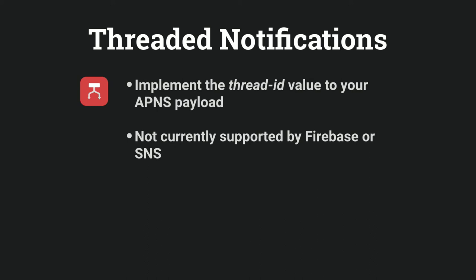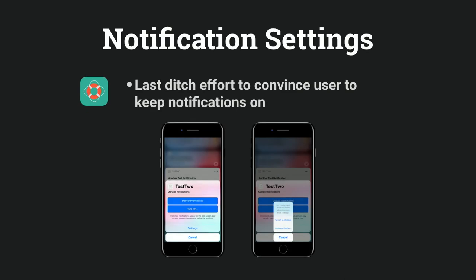Next up — threaded notifications. All you have to do to implement this is include a `thread-id` value in your notification payload for each unique notification thread you want to create. Currently both Google's Firebase Cloud Messaging and Amazon's Simple Notification Service don't support this parameter in their payloads, but that will more than likely change come iOS 12's general release. Threaded notifications are a great way to distinguish between notifications if you're already using notification topics from either of these services — you could just set your `thread-id` to that specific topic and call it a day. I'm bringing up notification topics because it has an interesting tie to my last useful quick tip.